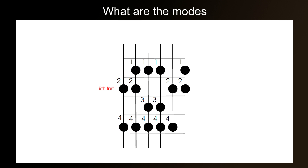Then, if we play from the next note up, the D, and end on the next note up from the ending of the previous scale — the D again — we end up with the next mode. This is the Dorian mode.